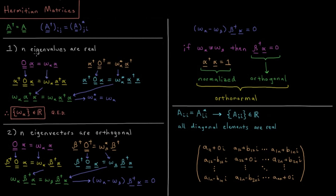Starting with property number one, we have the definition of being an eigenvector and eigenvalue. We have matrix O acting on vector alpha equals a constant omega times the same vector alpha. This is the definition of an eigenvalue situation — the vector alpha is an eigenvector of matrix O and the eigenvalue of that eigenvector is omega alpha.